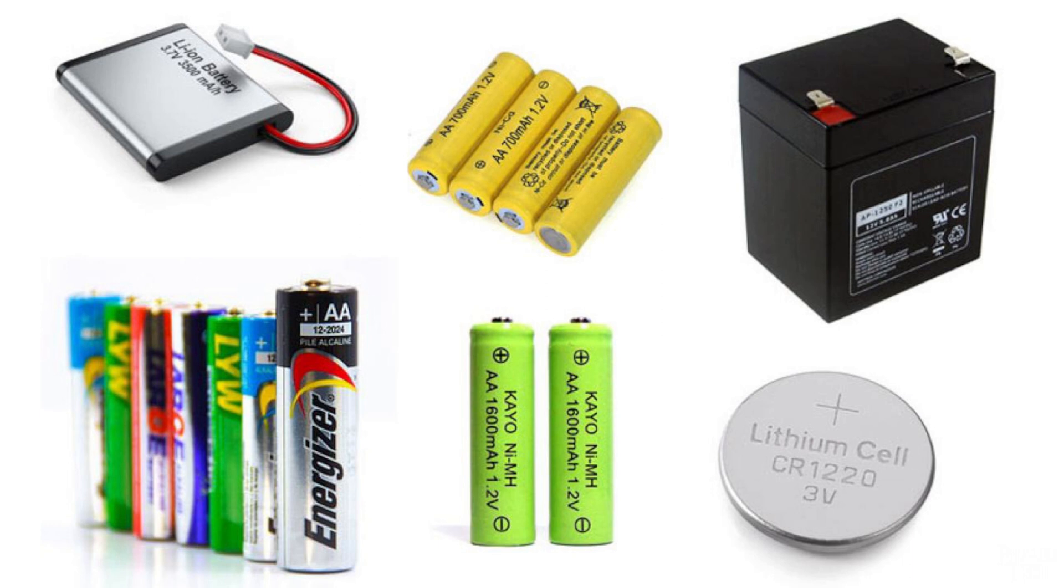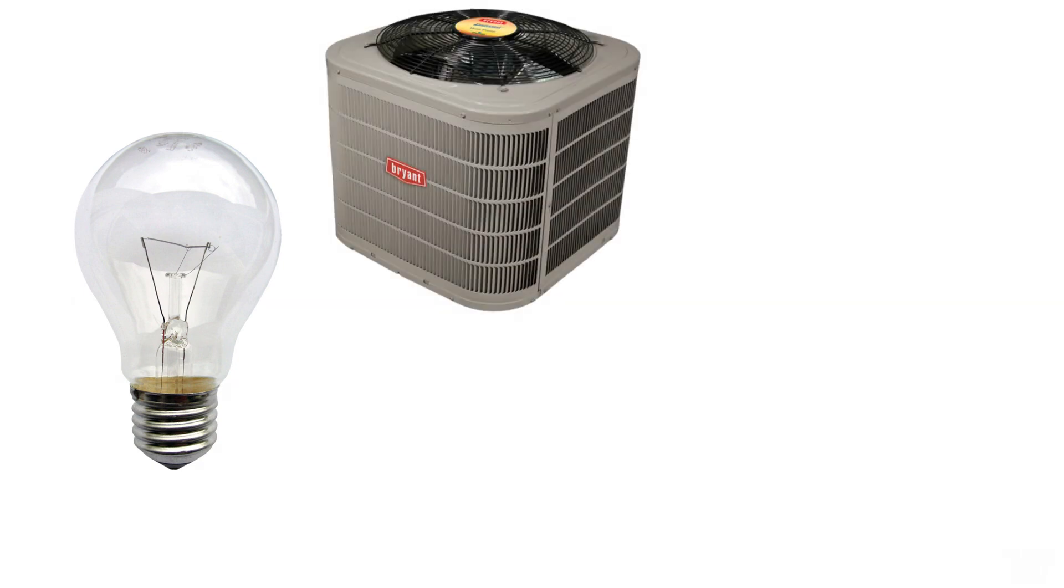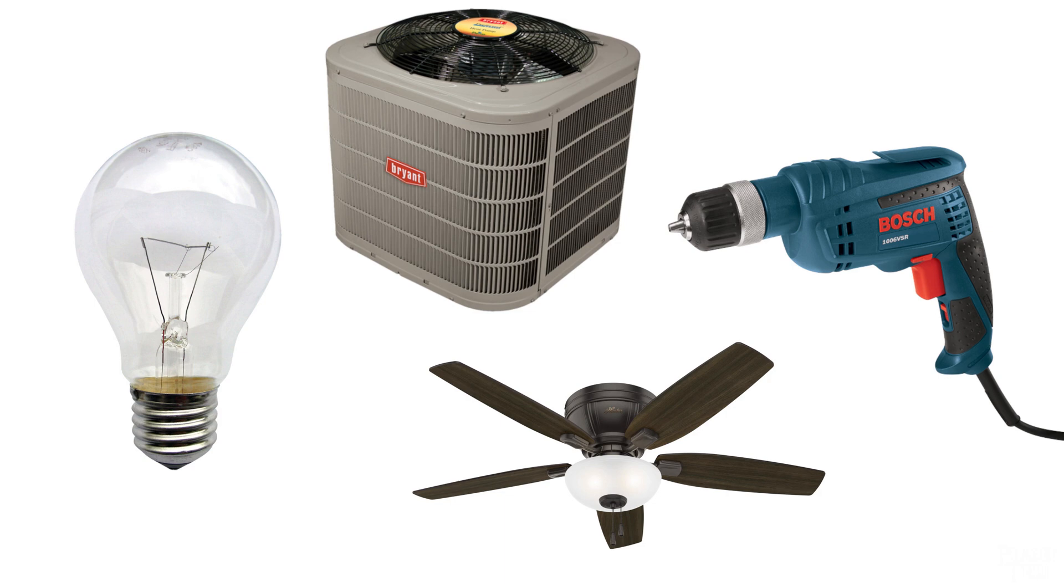However, not everything requires direct current. Some devices are designed to run straight off alternating current. Some examples are fluorescent and incandescent light bulbs, air conditioners, AC motors, which can be found in things such as fans and wired power drills, and a few other items and appliances.